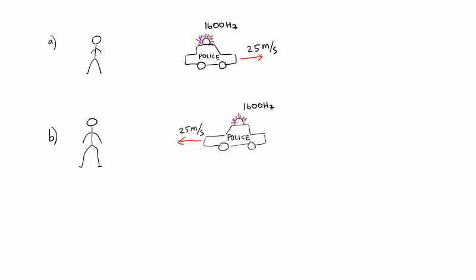So let's identify our givens. We have 25 meters per second - the police car is the source, so therefore this 1600 Hertz is the source frequency. 25 meters per second is the speed of the source, and the listener frequency is what we're looking for. The speed of the listener equals zero.